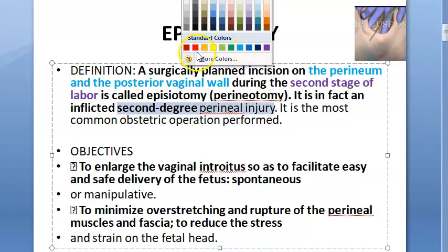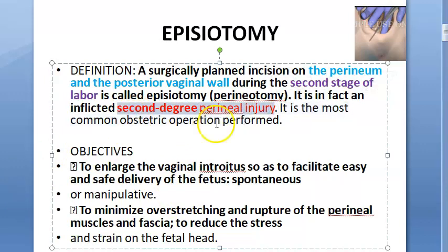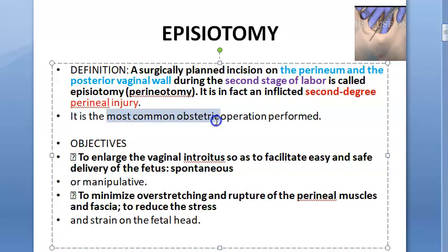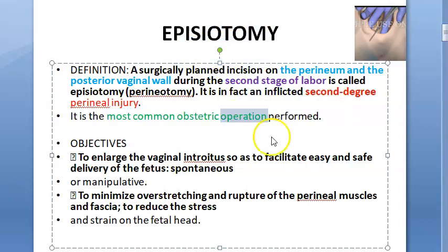You should know the degrees of injuries. It's quite a deep one — second degree. In second degree of injury, the outer layer, the skin, and the layer underneath are also affected. Third degree is even deeper; fourth degree is where the muscles are affected. It is the most common obstetric operation performed — remember this is the most common obstetric operation.